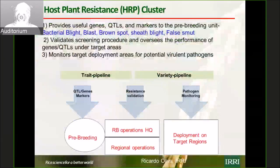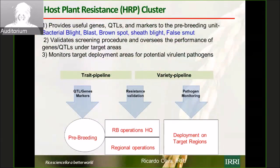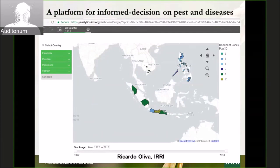For pest-plant resistance, we continue to work on bacterial blight, blast, brown spot, and BPH. We have started working at a large scale on seed blight and false smut — the emerging diseases — and we continue to move ahead. We have developed a platform for informed decision-making on pests and diseases, which is running well in the Philippines and Indonesia. It gives information on which biotype of a disease is prevalent and which gene you can use in the breeding program, and people are using it. We have plans to bring it to India from 2019.